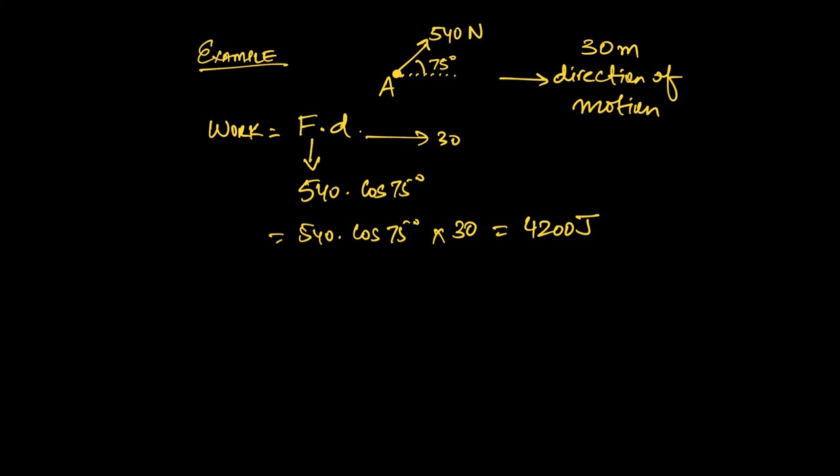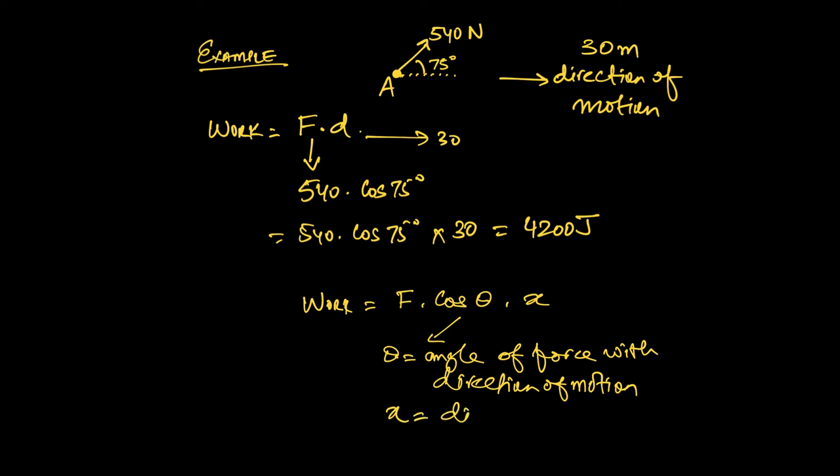So that brings us to a more general statement. If you want to write a statement for how much work is done, it's equal to the force times cosine theta times x, where theta is angle of the force with the direction of motion, and x is your displacement. So that's a more generic way to remember how to calculate work.